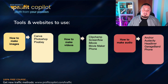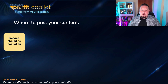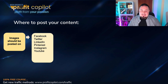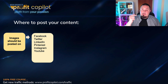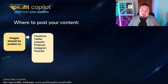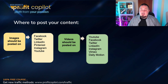Once you have your content and have turned your core pillar content into micro content, where do you post it? Your images should be posted on Facebook, Twitter, LinkedIn, Pinterest, Instagram, and YouTube. YouTube has a community section — go to your channel, go to community, and you can upload images that your subscribers will see. Videos should be posted on YouTube, Facebook, Twitter, LinkedIn, Instagram, Vimeo, and Dailymotion.